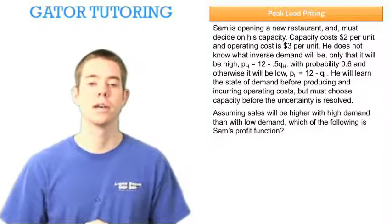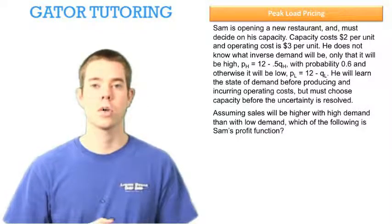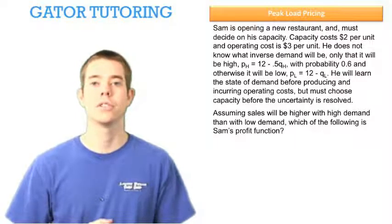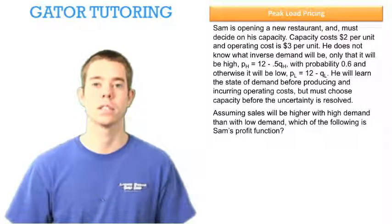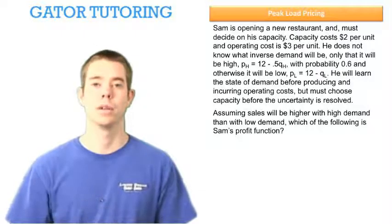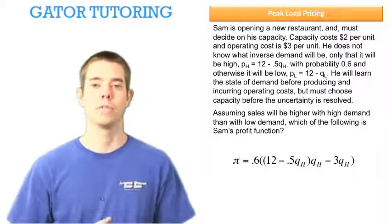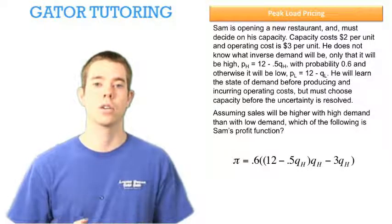The question says, assuming sales will be higher with high demand than with low demand, which of the following is Sam's profit function? So that question lets us know that our capacity constraint is not broken, because sales with high demand, Q_H, will be greater than sales with low demand, Q_L. So what's the profit function given that the constraint is not broken?